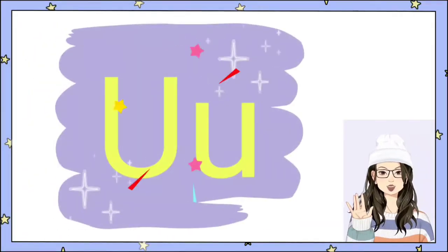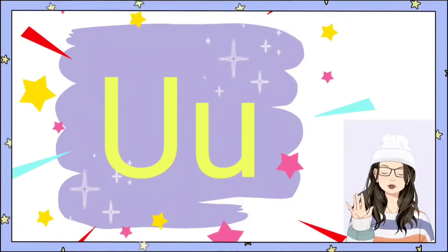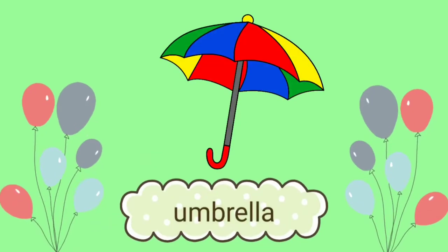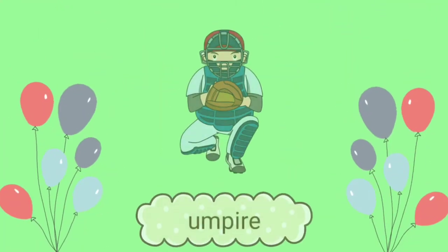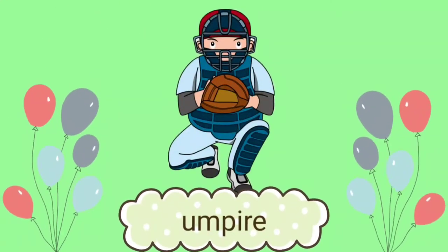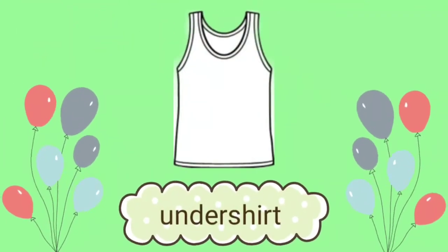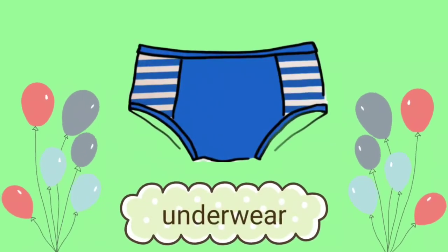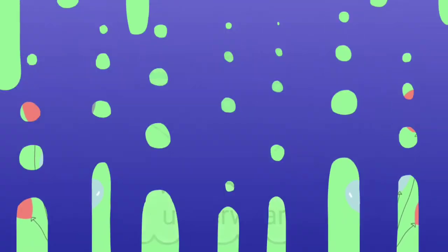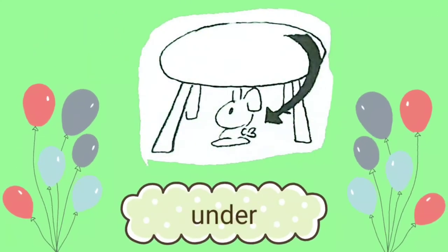U. U has the sound U. Again, letter U, sound U. As in umbrella, umpire, undershirt, underwear, ugly, and under.